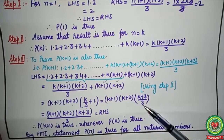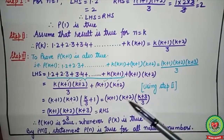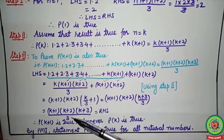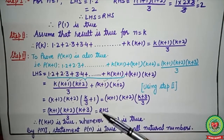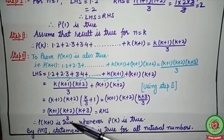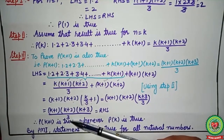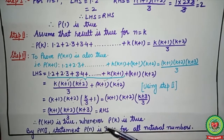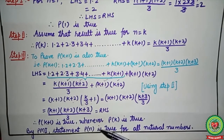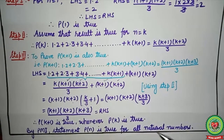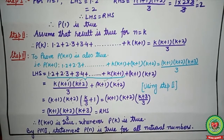Taking the LCM gives (k+3)/3, so we get the desired result: (k+1)(k+2)(k+3)/3, which matches the right hand side. Therefore the result is true for n = k+1. By the Principle of Mathematical Induction, statement P(n) is true for all natural numbers. Let's do one more important example.